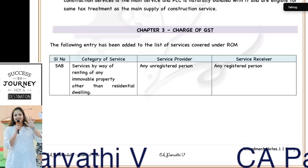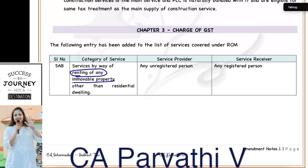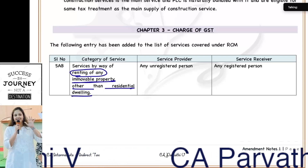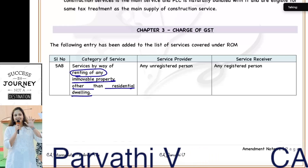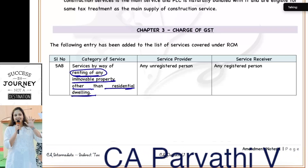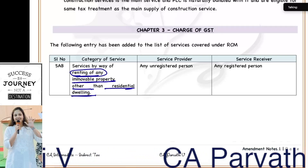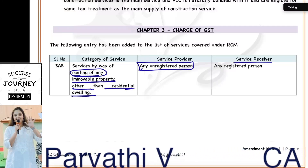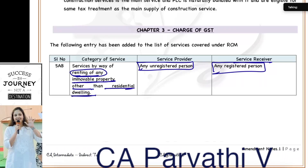This new RCM entry is renting of any immovable property other than residential dwelling. We already have another RCM entry which talks about renting of residential dwelling. Here it is renting of any immovable property other than residential dwelling — it can be any commercial property, it can be land, any immovable property other than residential dwelling — where the supplier is an unregistered person and the recipient is a registered person. Then it is taxable under RCM.